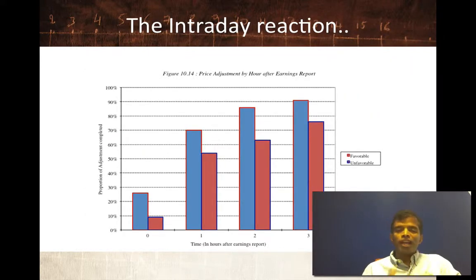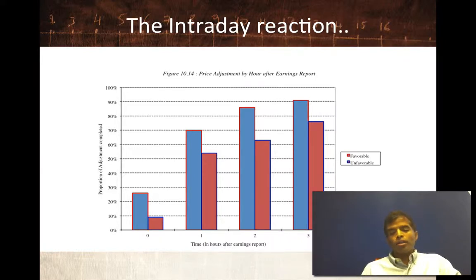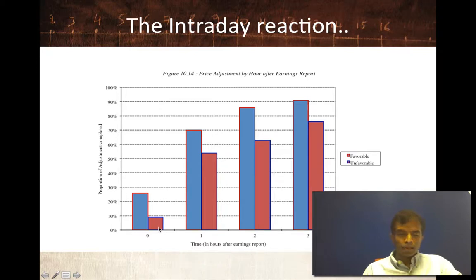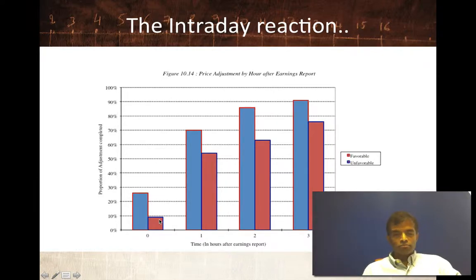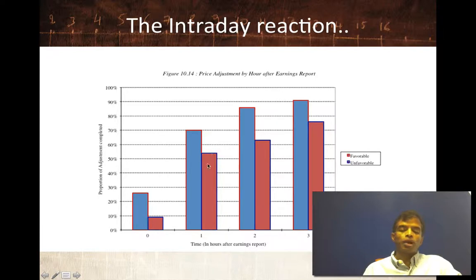Here's an interesting study that looks at intraday reaction to earnings reports. If earnings reports come out at 10:30 in the morning, what happens in the first 10 minutes, the first 30 minutes, the first one hour? The instantaneous reaction: if a negative surprise comes out, the price immediately drops 25%. A positive surprise comes out and the price jumps 10%. One hour after the announcement, the stock price is up 50% of the total reaction — so 55% of the price reaction has happened within one hour for positive surprises.